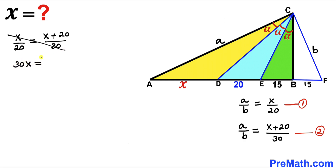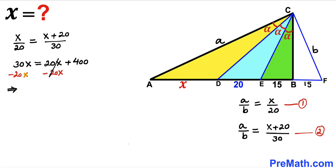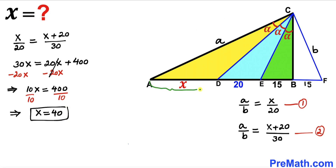Cross-multiplying: 30X equals 20 times (X plus 20), which gives 30X equals 20X plus 400. Subtracting 20X from both sides, 20X and negative 20X cancel, leaving 10X equals 400. Dividing both sides by 10, we get X equals 40 units. So segment AD, represented by X, is 40 units.